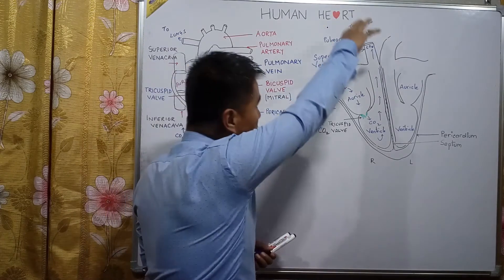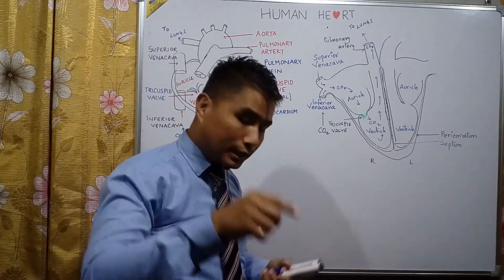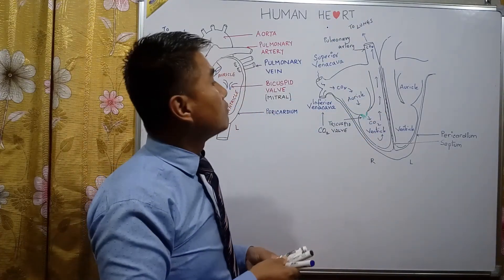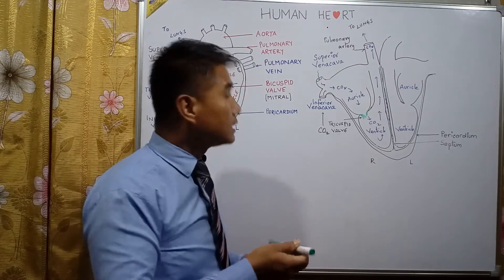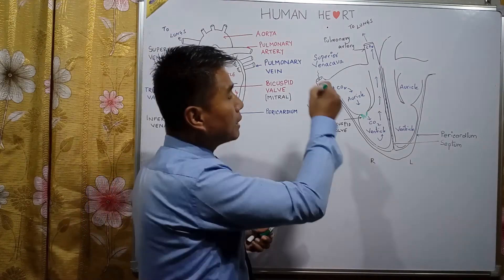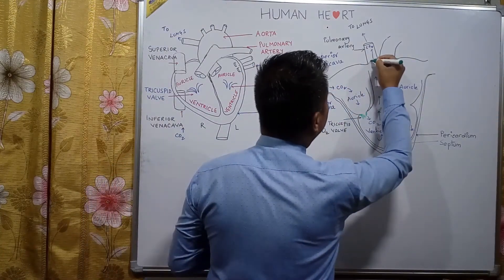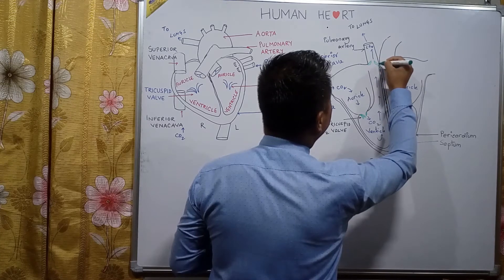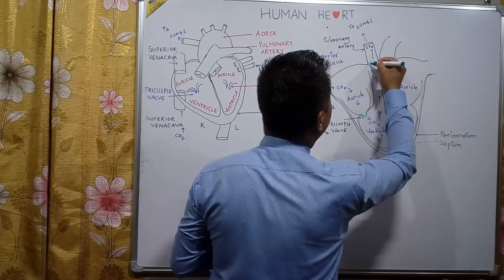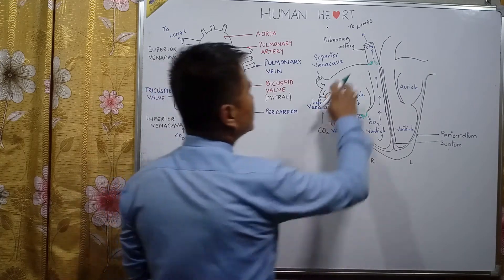To prevent backflow, there is a valve in the pulmonary artery which is known as the semi-lunar valve.